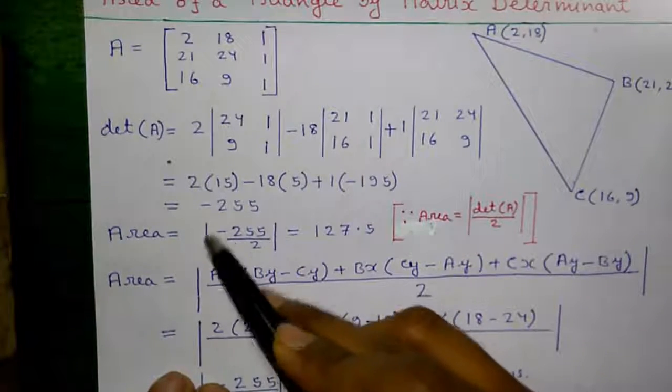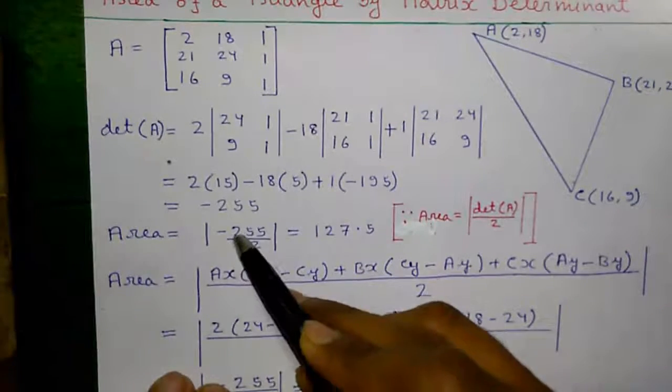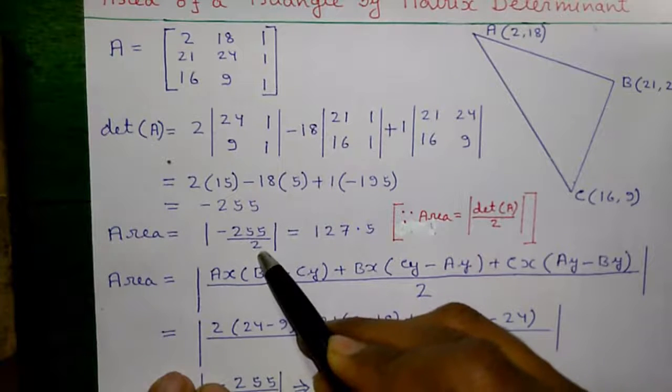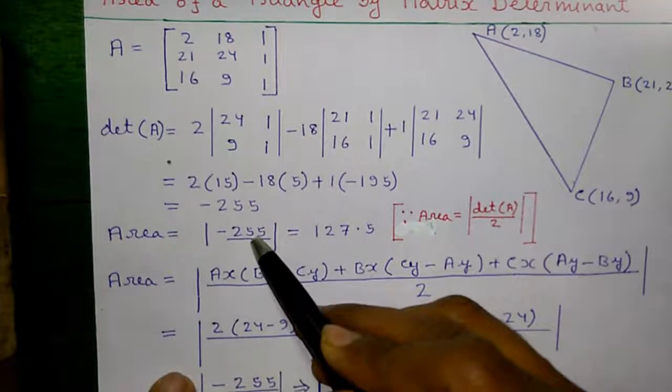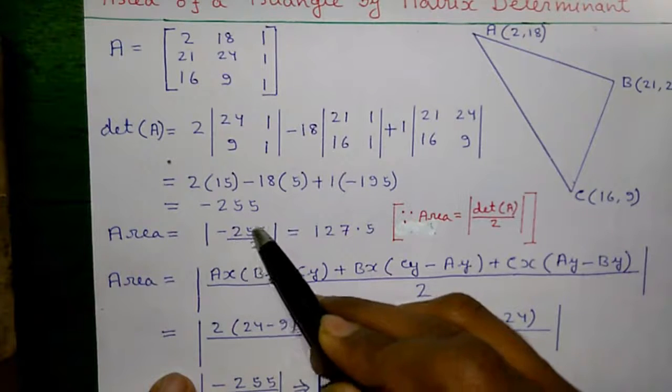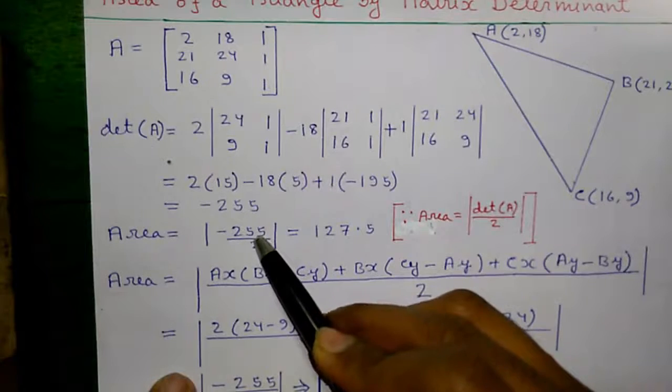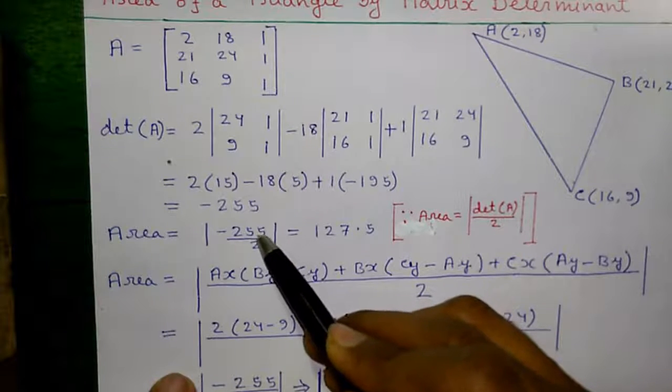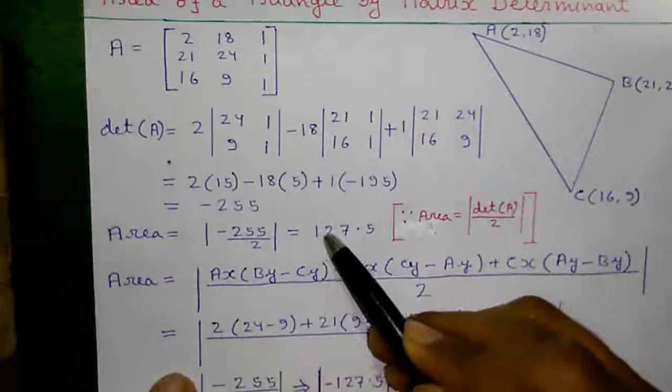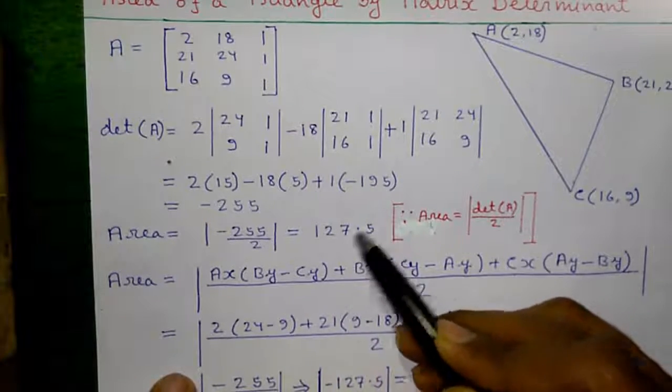Now, area equals to absolute of determinant of matrix A divided by 2. That's equal to absolute of minus 127.5. Since the area cannot be negative, we will take only the positive value. That is 127.5 is our required area.